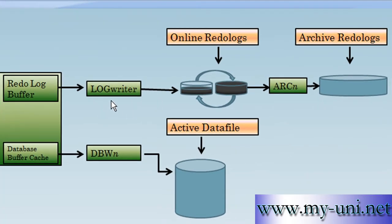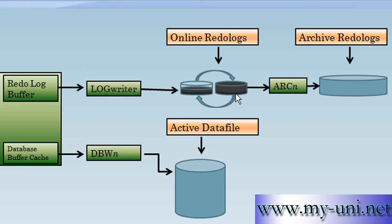The log writer background process, in contrast, works as hard as possible to write to online redo log files. This data is eventually written to archive redo log files by a process called archiver, if your database is running in archive log mode. Online redo log files are written in a circular fashion — the log writer writes to one file, and when it's full, it starts writing to the next one.